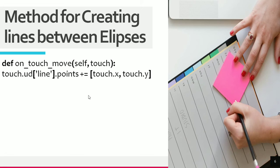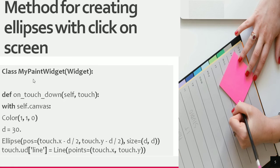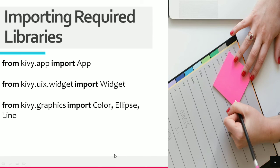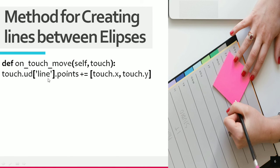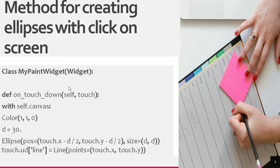Inside on_touch_move, we use touch.ud line dot points plus equals to add points. So an ellipse will be created on click, and by dragging the mouse a line will be created between those ellipses. This is how we create the method for creating lines between the ellipses using the two methods on the MyPaintWidget class.